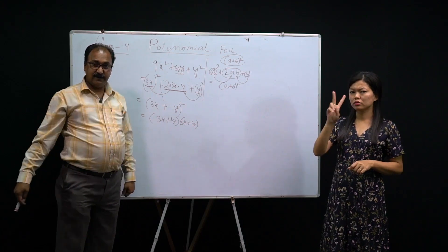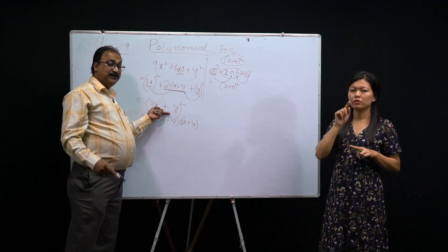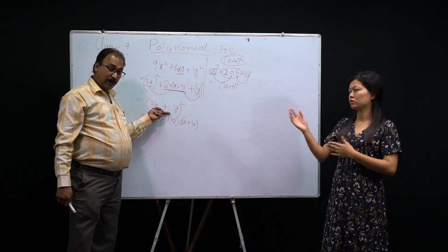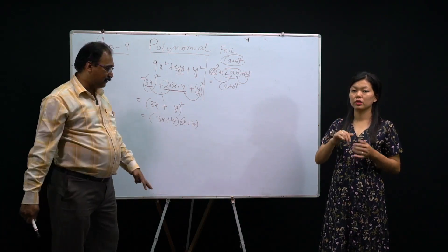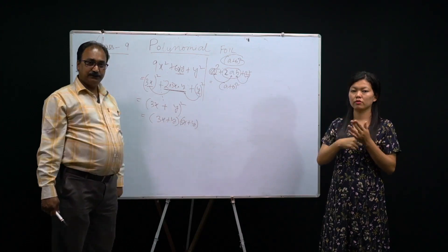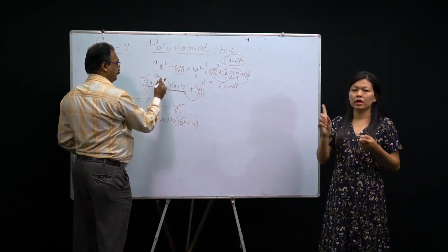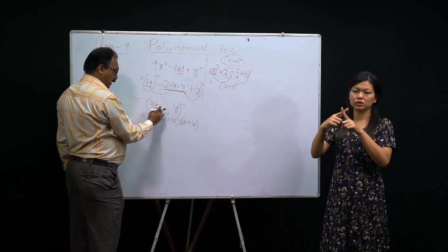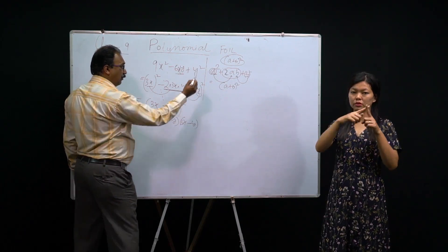Understanding that square means two identical factors is more important than just writing the book answer. If you become an engineer one day, this thinking will carry you far. Square means two factors, cube means three factors — that is what factorize means. Now if the middle term is minus, then the formula becomes (a−b)², and the expression will be (a−b)(a−b).